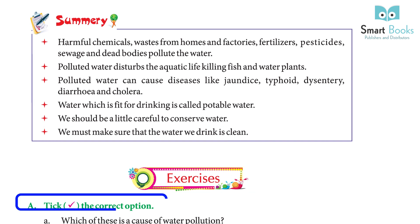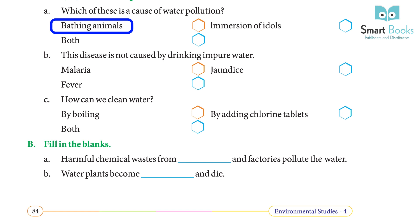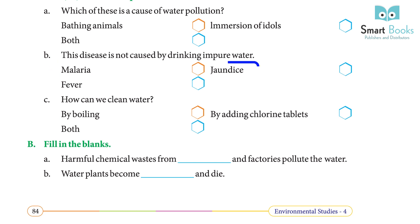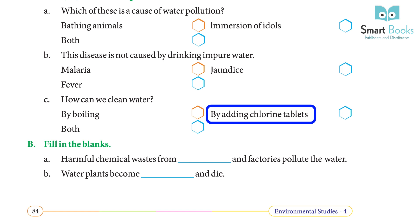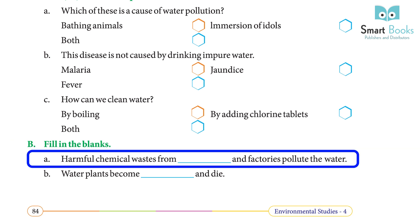Exercise A — Take the correct option. A) Which of these is a cause of water pollution? Bathing animals, immersion of idols, both — Answer: Both. B) Which disease is not caused by drinking impure water? Malaria, Jaundice, Fever — Answer: Jaundice. C) How can we clean water? By boiling, by adding chlorine tablets, both — Answer: Both.